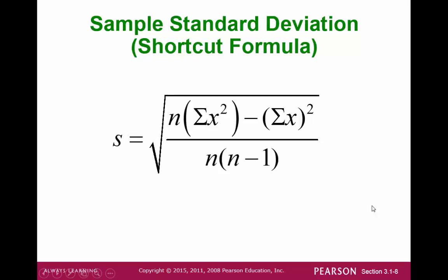In the older days, before much technology, it turned out that it was easier to find the sum of the values and the sum of the squared values, especially for larger datasets. So we came up with a shortcut where we use sigma x and sigma x squared. We won't spend too much time on using these formulas. Please make sure you are able to use the calculators.